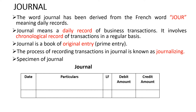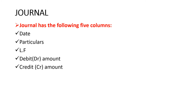This is the specimen for a journal. It has five columns: first is the date column, second is particulars, third is ledger folio (LF), fourth is debit amount column, and fifth is credit amount column.